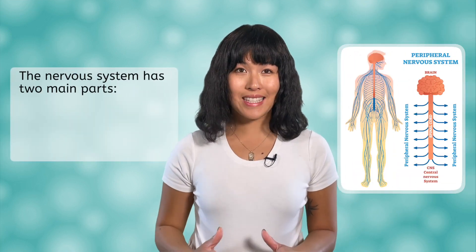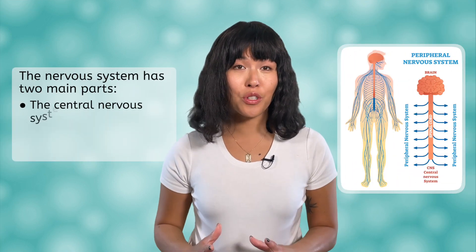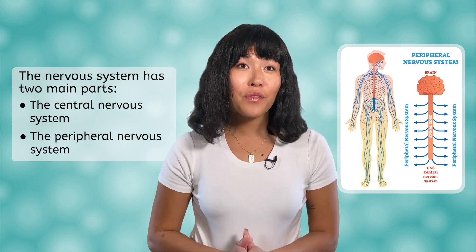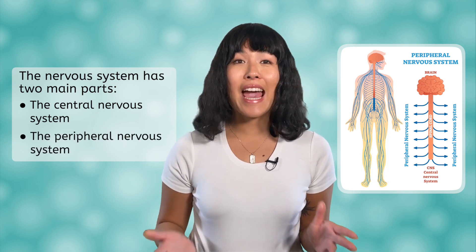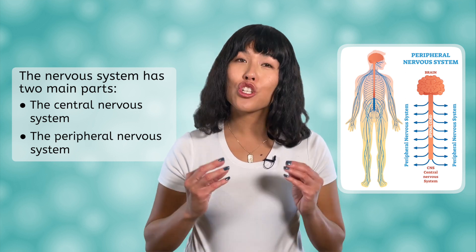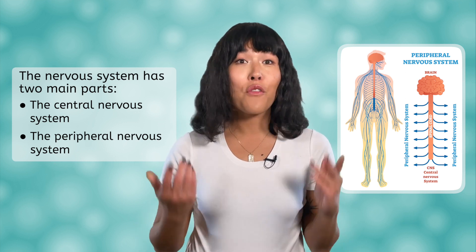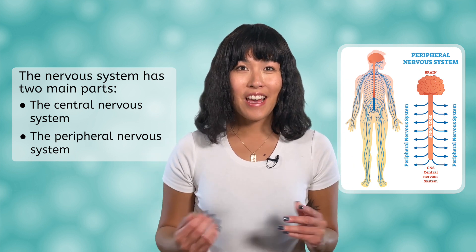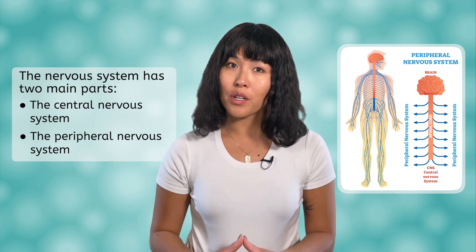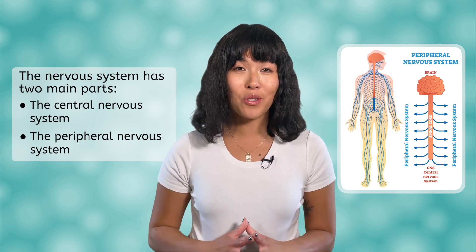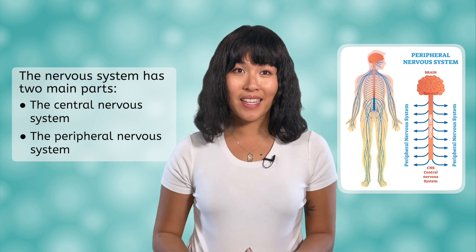The nervous system has two main parts: the central nervous system and the peripheral nervous system. The central nervous system is made of the brain and the spinal cord. Its main job is to control the flow of information from the brain out to the body, then back again. The peripheral nervous system is made of the nerves that radiate out from the spinal cord to the rest of the body.